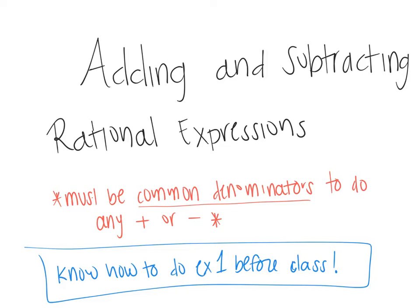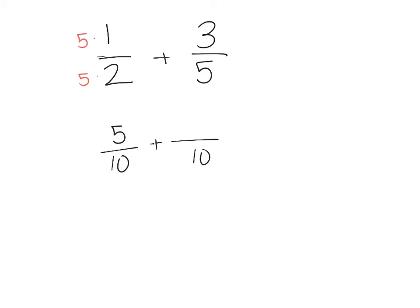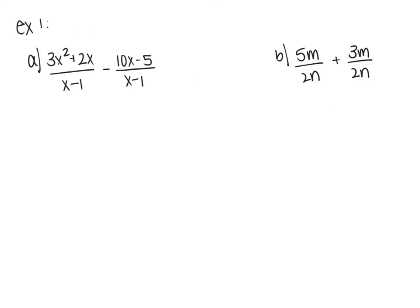Make sure you know how to do example one before you come into class. If I have the fraction 1/2 plus 3/5, I cannot add them unless I get a common denominator. With 2 and 5, my least common denominator would be 10. To get from 2 to 10, I multiply top and bottom by 5 to get 5/10, and multiply top and bottom by 2 to get 6/10. Now I can add 5 plus 6 over 10, giving me 11/10.